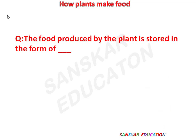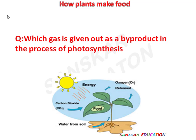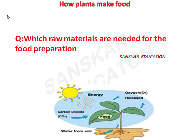The food produced by the plant is stored in the form of — answer is: starch. Which gas is given out as a by-product in the process of photosynthesis? Answer is: oxygen.